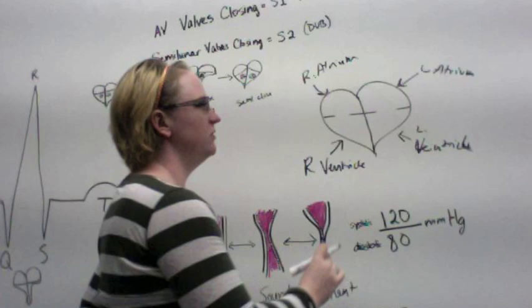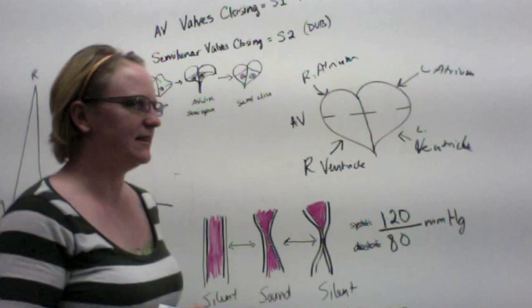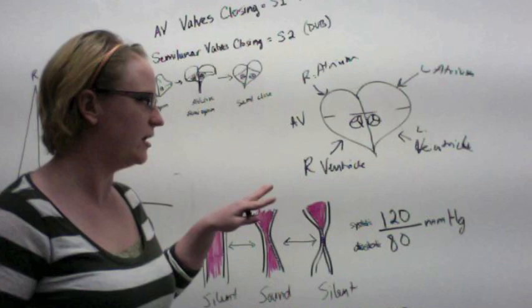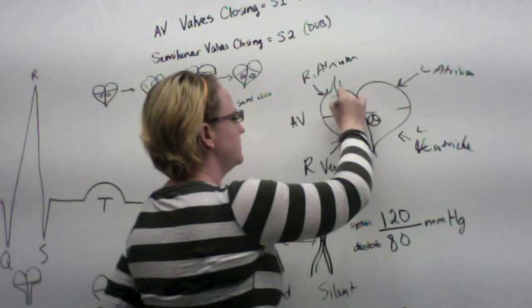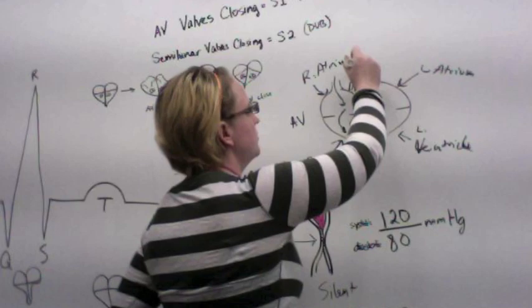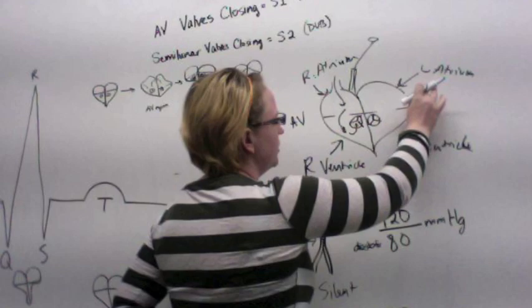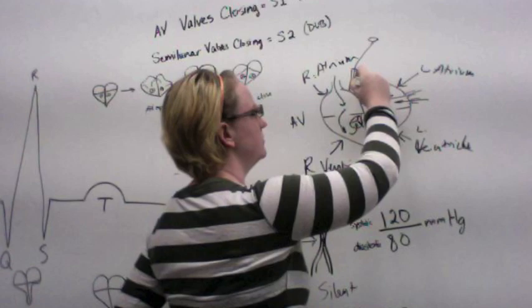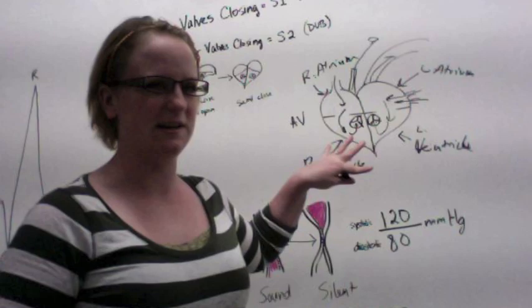You have one valve type that connects your atria to your ventricle — those are the AV or atrioventricular valves. Then you have another kind that exits the ventricle and enters into an artery — those are semilunar valves. Blood fills the atrium, the atrium squishes, blood goes down into the ventricle, then the ventricle squishes, and blood leaves via the semilunar valve and exits out of an artery — either to the lungs on the right side, or out to the body via the aorta on the left.